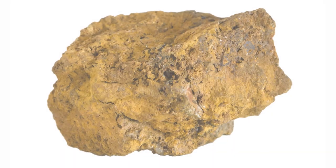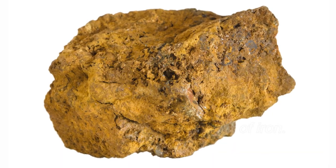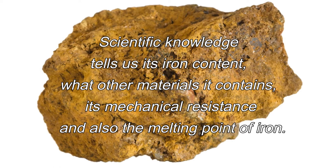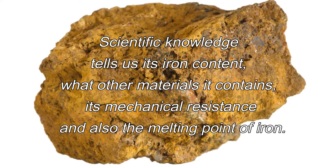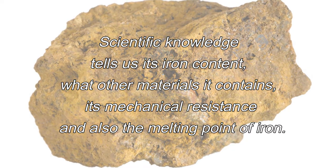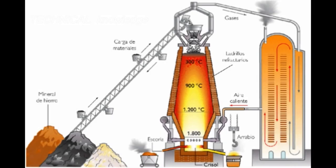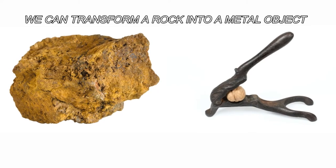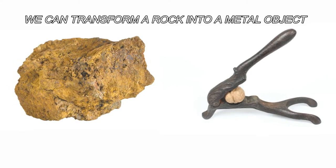Let's look at another example. This rock is called limonite, and it is an iron ore. Scientific knowledge tells us its iron content, what other materials it contains, its mechanical resistance, and also the melting point of iron. On the other hand, this diagram shows the sequence of steps we must carry out to extract the iron from that rock — this refers to technical knowledge. Technology allows us to transform this rock into an object like this, and for this we need both technical and scientific knowledge.